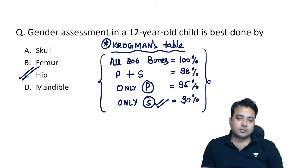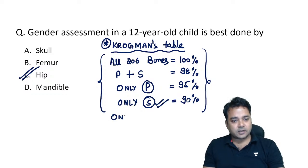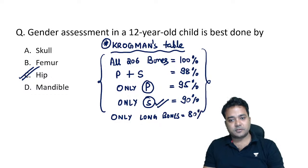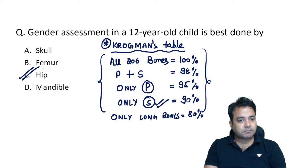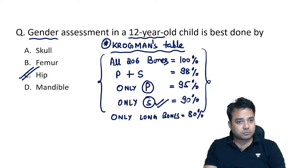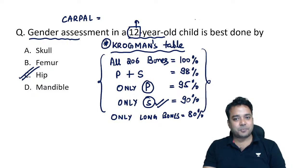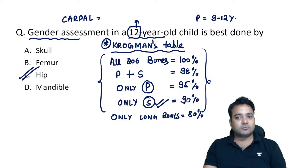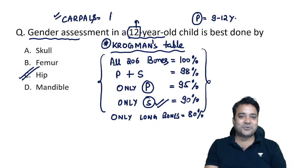Carpal bones have not been categorized by Krogman's table specifically, but long bones (including all other long bones) have an accuracy of about 80% for gender determination. In a 12-year-old child, carpals have a role in age estimation — for example, pisiform ossifies by 9 to 12 years, so if pisiform appears on X-ray, we can say the child is around 12 years old. Carpals are used for age estimation rather than gender determination.